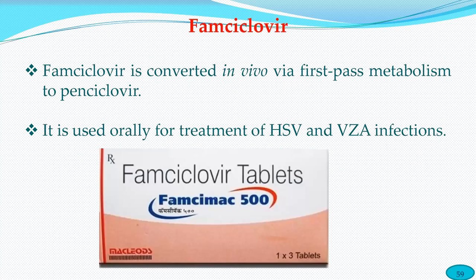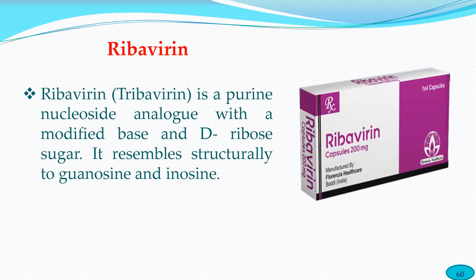Famcyclovir is converted in vivo via hepatic first-pass metabolism to pencyclovir, which is the active metabolite. It is used orally for treatment of herpes simplex virus and varicella-zoster infections. Famcyclovir is available as 500 mg tablets in blister packs.